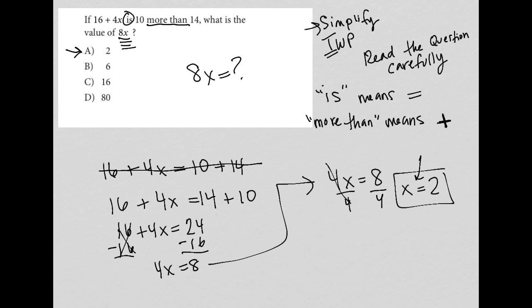So since we know x is equal to 2, and we know we're looking for 8x, I can say, well, 8 times x is just equal to 8 times 2 because x is 2. And therefore, the answer is actually 16, which is choice C.